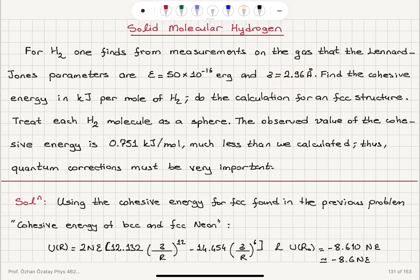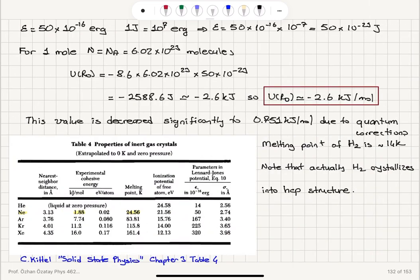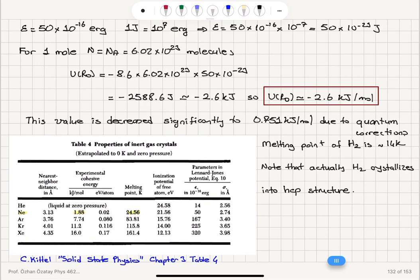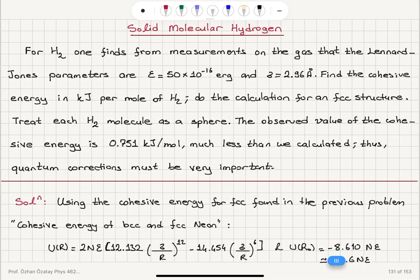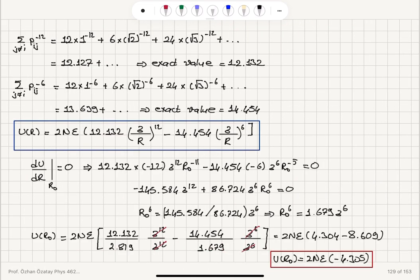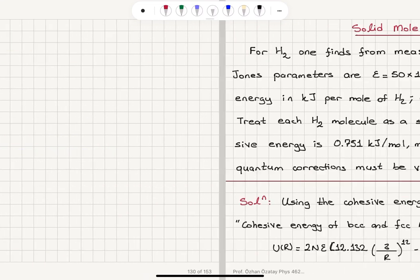taking σ = 2.96 Å for hydrogen (compared to σ = 2.74 Å for neon), we obtained the cohesive energy using this formalism with the proper choice of σ and ε.